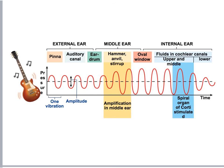Here's a summary of the hearing pathway: sound vibrations come in through the external ear to the eardrum, get amplified through the middle ear via the hammer, anvil, and stapes to the oval window. Fluids in the upper and middle cochlear canals relay the sensation to the hair cells. The organs of Corti are stimulated, which then stimulates the nerve for the sensation of hearing.